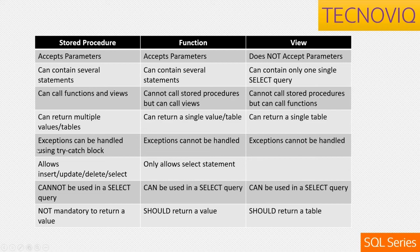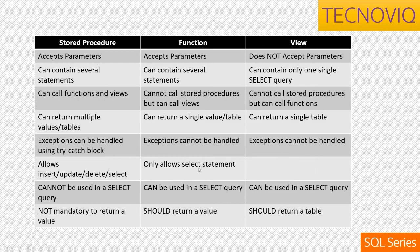Another important difference: stored procedures support TRY-CATCH blocks, so you can handle exceptions within the procedure. You cannot do this in functions or views. On a view there's only one statement so there's less chance of failure, but if you have a potential divide-by-zero in a SELECT, you'd have to handle that outside the view. Also, stored procedures allow INSERT, UPDATE, and DELETE in addition to SELECT, whereas functions only allow SELECT.